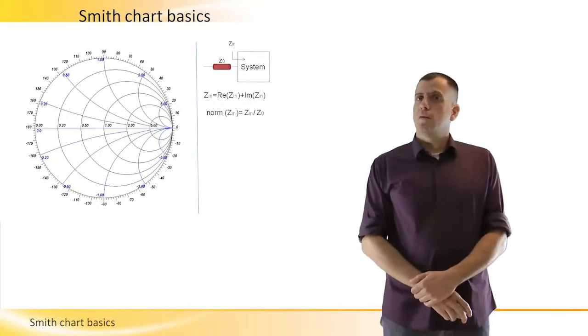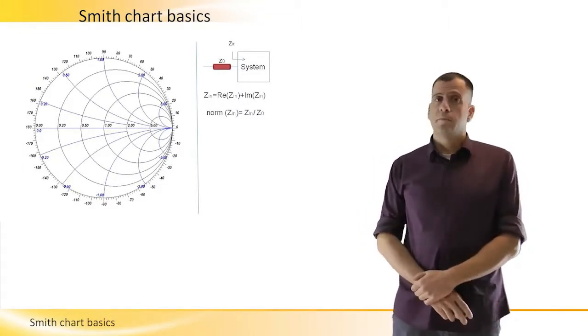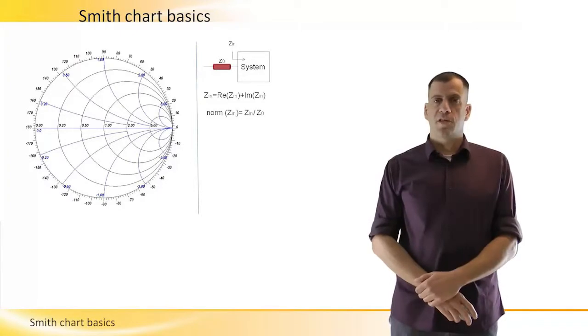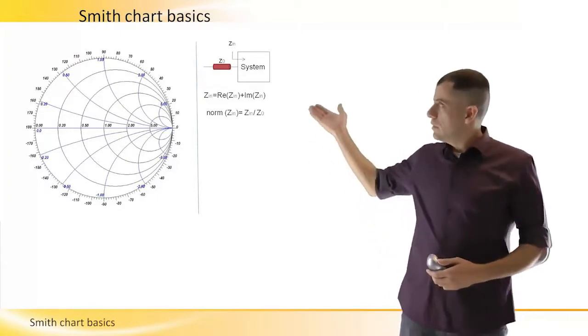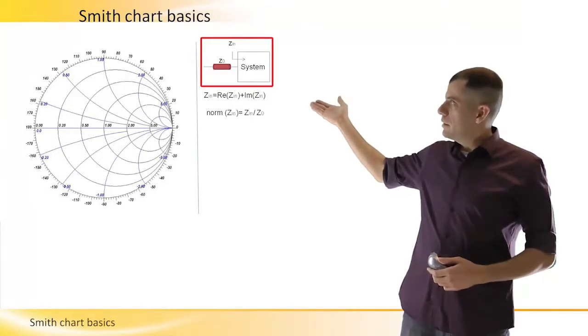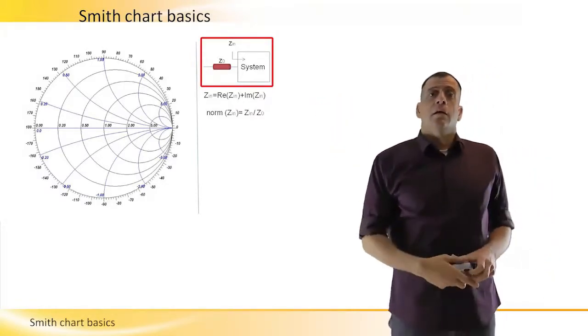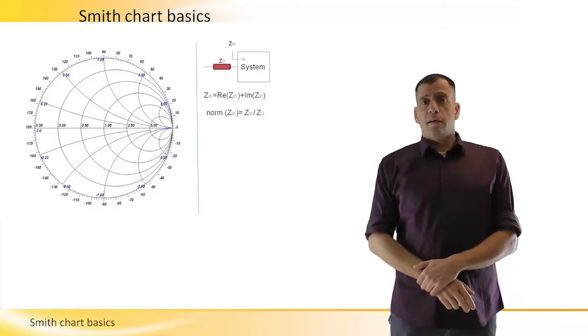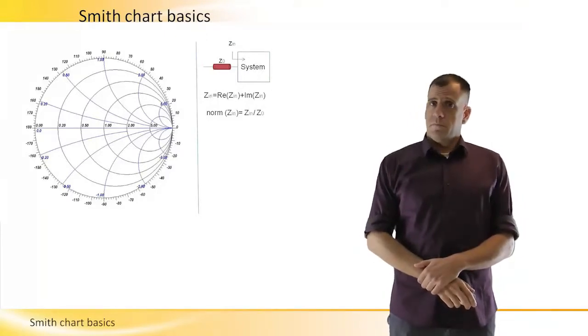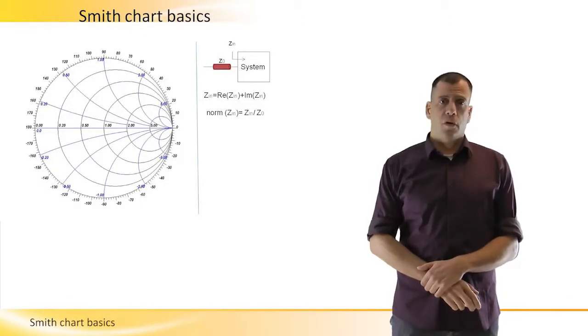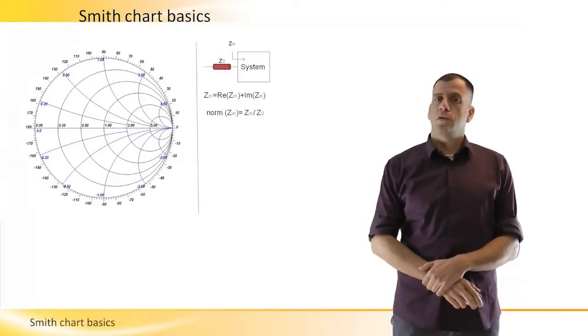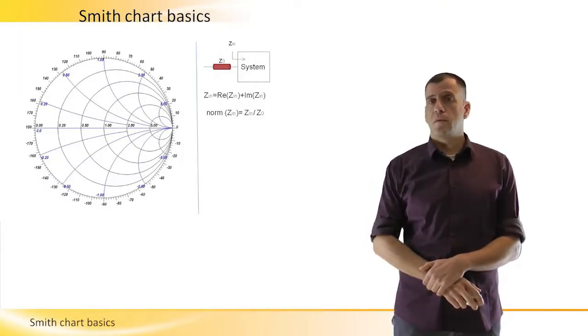Let's start by looking at a system which is connected to a transmission line with an impedance of ZO, like here in this image. It could be a common 50 ohm line or any other impedance like 75 ohm or around 300 ohm, which is in the waveguide case.